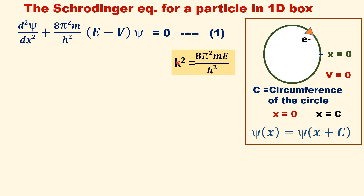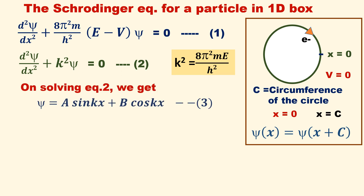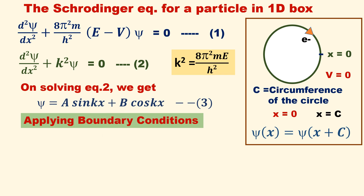Since V equal to 0, let us consider k-squared equal to 8 pi-squared m by h-squared times E. This is a second order differential equation. We need to find the values of A, B, and k in order to describe the path of the particle and define the wave function psi. Let us apply the boundary conditions to obtain k, A, and B.